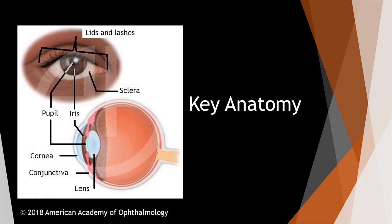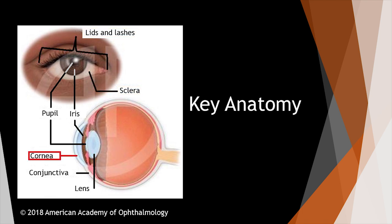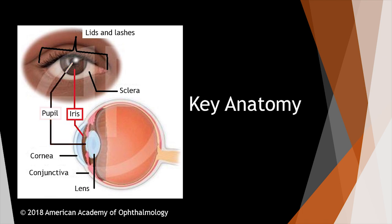First, the key anatomy of the anterior eye. Starting from the exterior, we will first see the lids and lashes. Next, we will see the white sclera and the transparent cornea. We will also see the conjunctiva, which is overlying the sclera. We will see the pupil — the black spot in the middle of the eye — the colored iris, and the lens, which helps focus light onto the back of the eye.